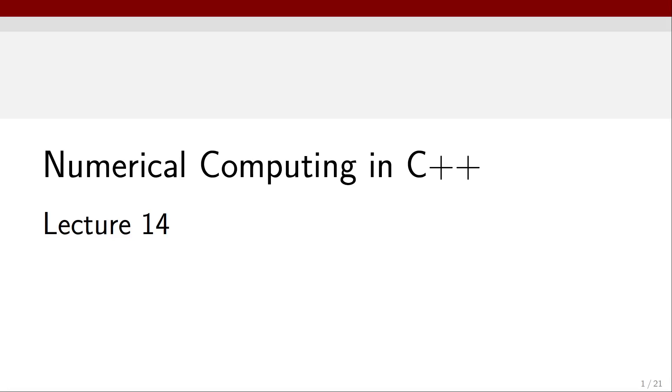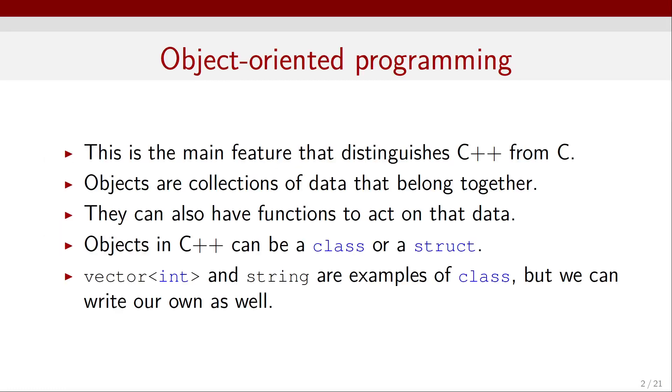Hello everyone, in this video we will introduce object-oriented programming in C++. Object-oriented programming is the main feature that distinguishes C++ from simple C. Objects are collections of data that belong together. They can also have functions to act on that data.